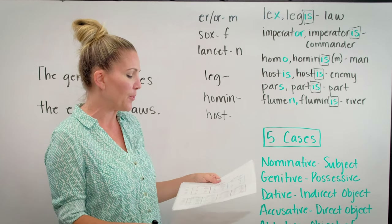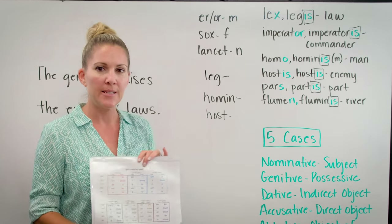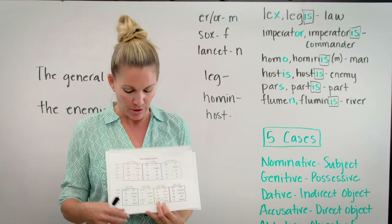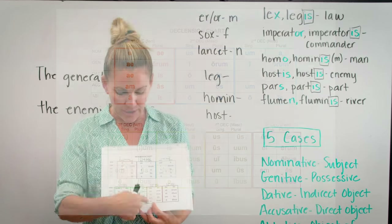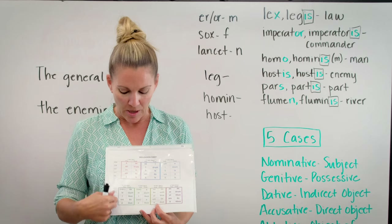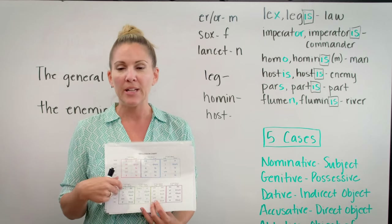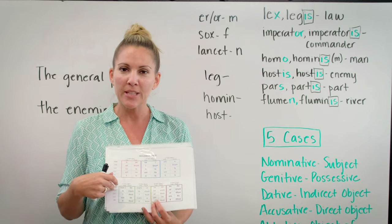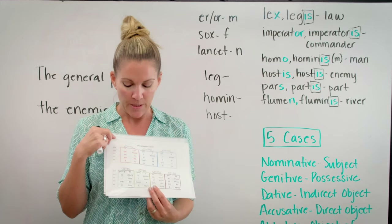If you have your handy declension cheat sheet, pull it out. We're going to be looking at these two green boxes here. I will put a link in the description — if you don't already have this, you can print it out.